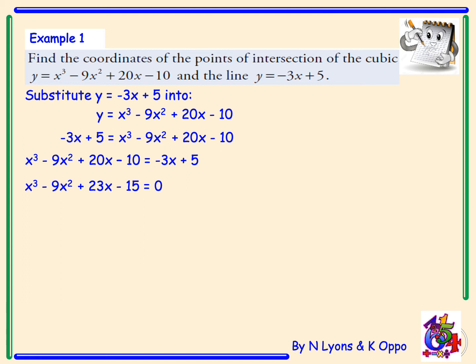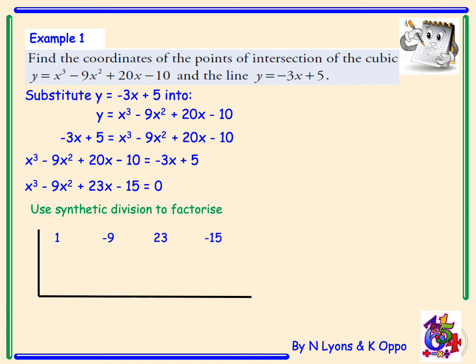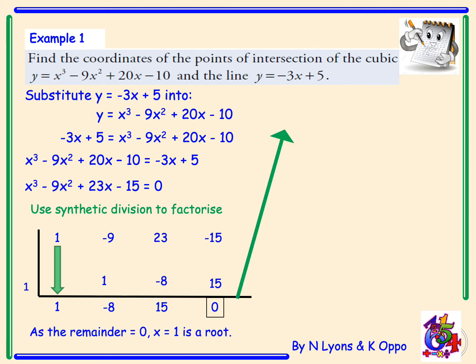To factorise this cubic we have to use synthetic division. We write our coefficients: 1, minus 9, 23, and minus 15. We need to guess factors of 15, so I'll try the number 1. Bringing the first coefficient down: 1 times 1 is 1; negative 9 plus 1 is negative 8; 1 times negative 8 is negative 8; 23 add negative 8 is 15; 1 times 15 is 15; and negative 15 add 15 is 0. So as we have a remainder of 0, x equals 1 is a root.